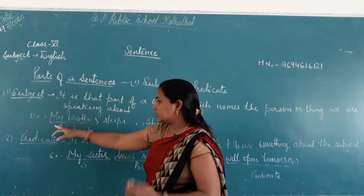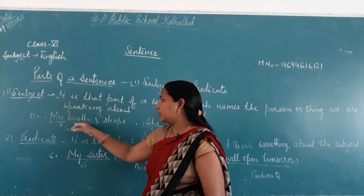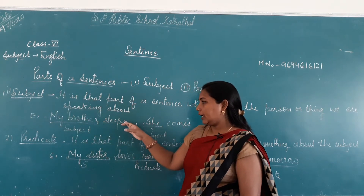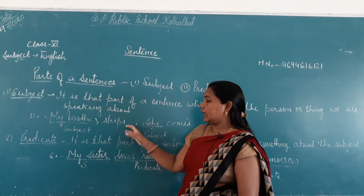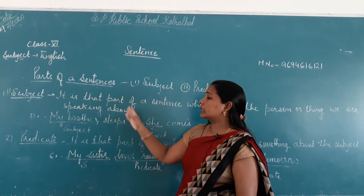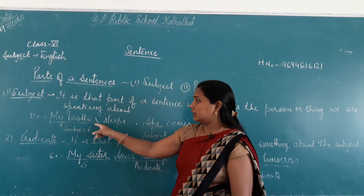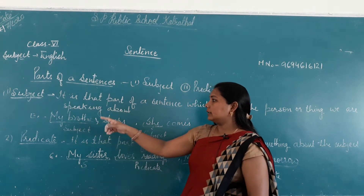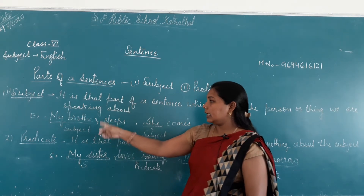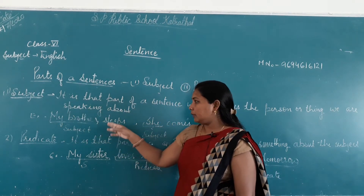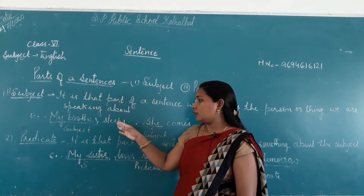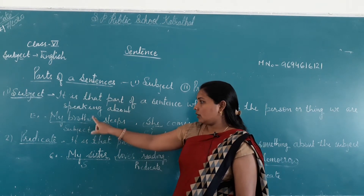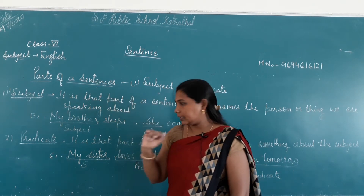जैसे एक example: 'My brother sleeps' — मेरा भाई सोता है। तो यहाँ पर सोने का जो work है, वो किसके through किया जा रहा है? My brother के साथ किया जा रहा है। तो हम किसके बारे में बात कर रहे हैं? इस person के बारे में — कि मेरा जो brother है वो सोता है। So 'My brother' is our subject in this sentence.